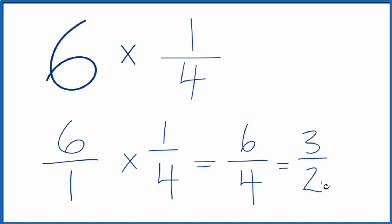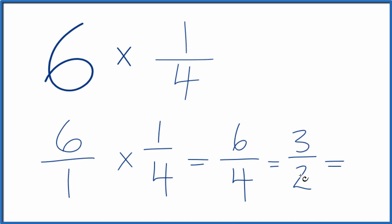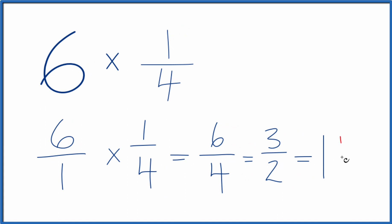This is an improper fraction because 3 is larger than 2. Let's change it to a mixed number. 2 goes into 3 one time with 1 left over. Bring this 2 over. So 3 halves, that equals the mixed number 1 and 1 half.